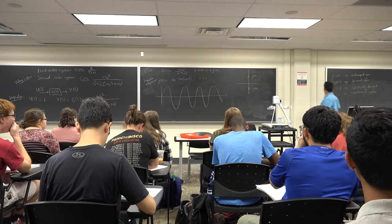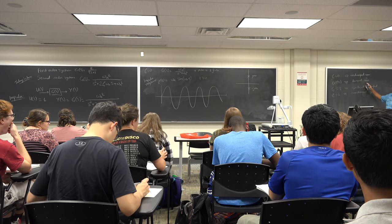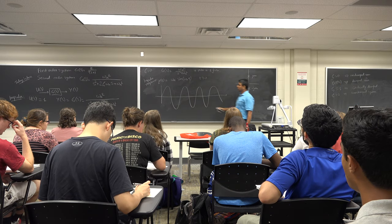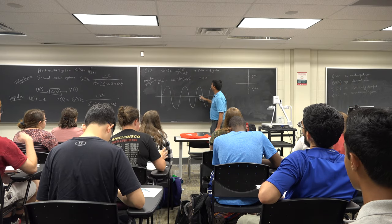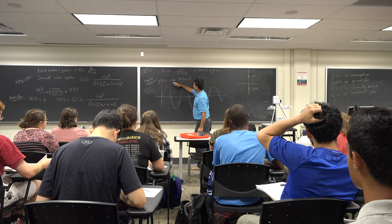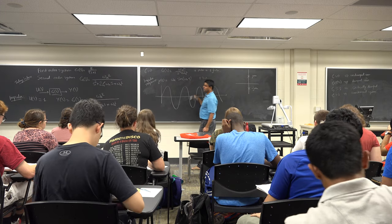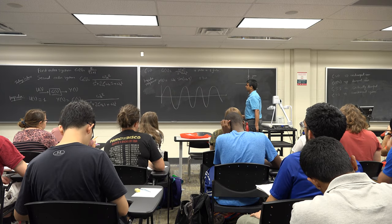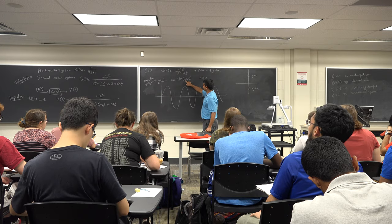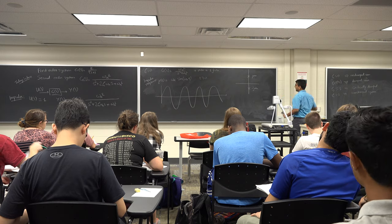We have already looked at the case where ζ ∈ (0, 1) — that's known as the underdamped case. In the underdamped case, you have a decaying sinusoid. Note that the frequency of the sinusoid was ωd, not ωn — the damped frequency depends on the damping factor ζ.